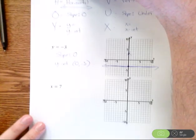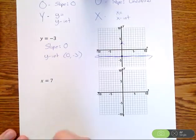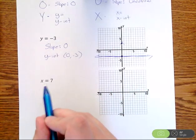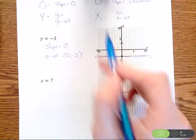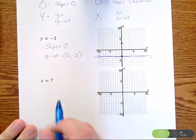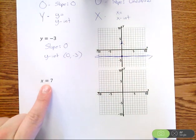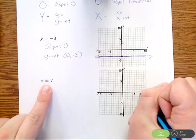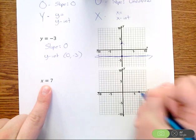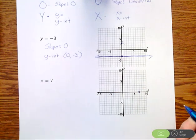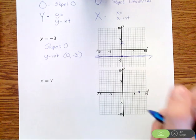And then my second problem here, x equals seven. So thinking about VUX, I see X, VUX VUX. So I know it's a vertical line. Undefined slope. I'm going to be an x equals problem. I need an x-intercept at seven. So we go on the x-axis to seven and put a point. Remember I need a vertical line, so it's going up and down.